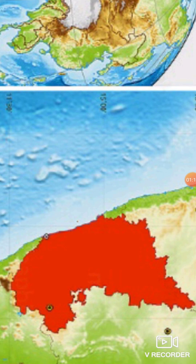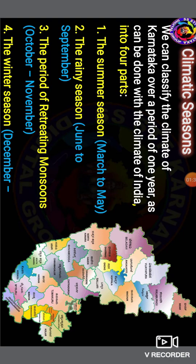Hence, the annual temperature and distribution of rainfall are not the same all over the state. We can classify the climate of Karnataka into four parts over one year: the summer season, the rainy season, the period of retreating monsoon, and the winter season. The Malnad and coastal plains receive heavy rainfall, while the eastern plains are areas of low rainfall. Droughts and floods occur due to uneven and uncertain rainfall in Karnataka.